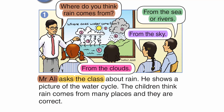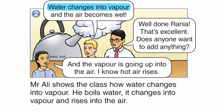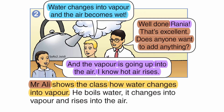Mr Ali asks the class about rain again and shows a picture of the water cycle. The children think rain comes from many places, and they are correct. Water changes into vapour, the air becomes wet, and the vapour rises into the air. Mr Ali shows the class how water changes into vapour and rises into the air.